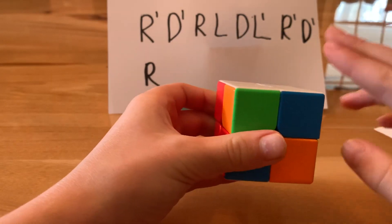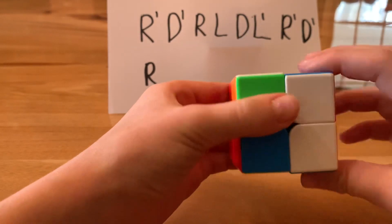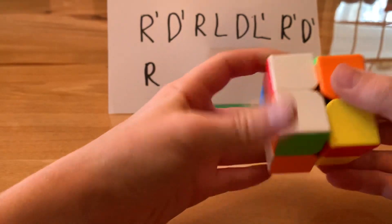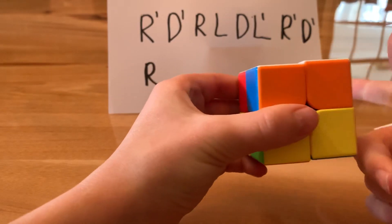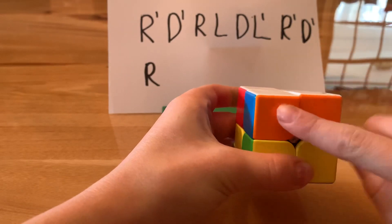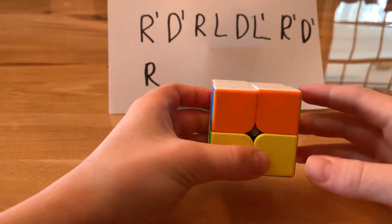Then you have a pair faced away from you and do it again. So R prime, D prime, R, L, D, L prime, R prime, D prime, R. So if you had a pair at the beginning, then it should solve the layer. If not, you probably messed something up.